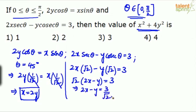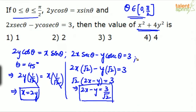We now have two equations in two unknowns: x = 2y, and 2x − y = 3/√2. We can solve for x and y, then substitute into the required expression x² + 4y².